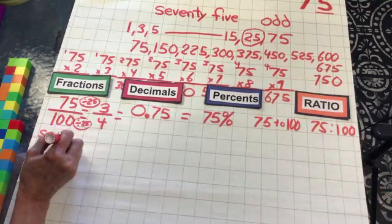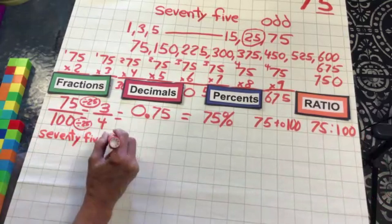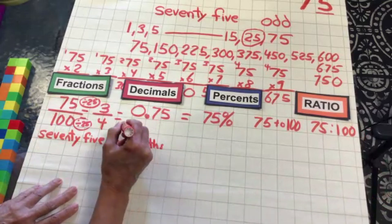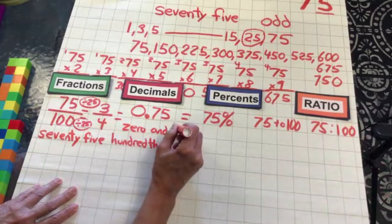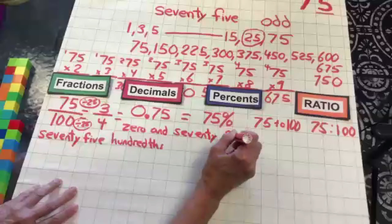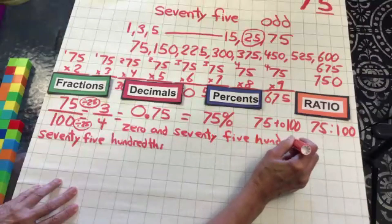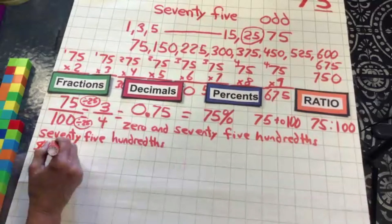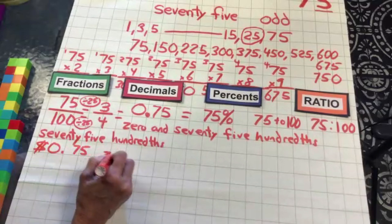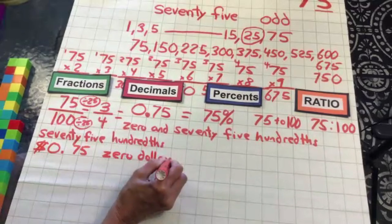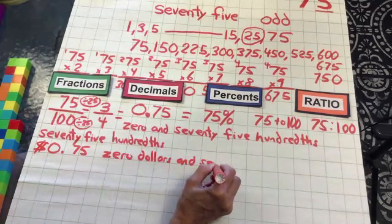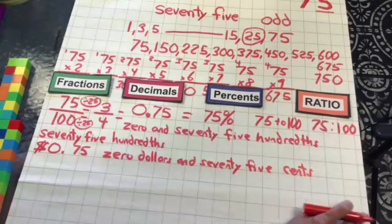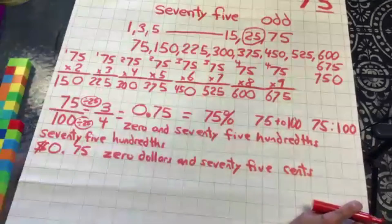The word form of the fraction would be seventy-five hundredths — getting that 'hundredths' at the end. The dollar form would be zero dollars and 75 cents — remember those 'ands' — written as $0.75.